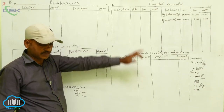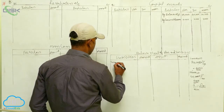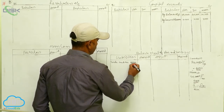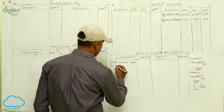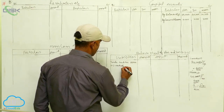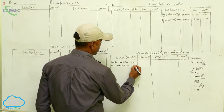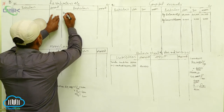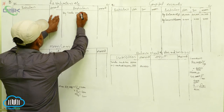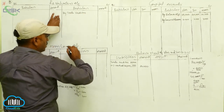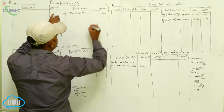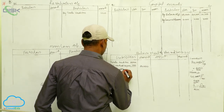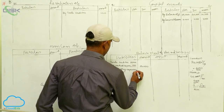Since we are not preparing a separate general reserve account, we record it directly in the capital accounts on the credit side. Trade creditors have an adjustment: the balance sheet figure is ₹25,000 but ₹1,000 need not be paid, so it decreases to ₹24,000. Outstanding expenses have no adjustment — directly written as a liability of ₹5,000.